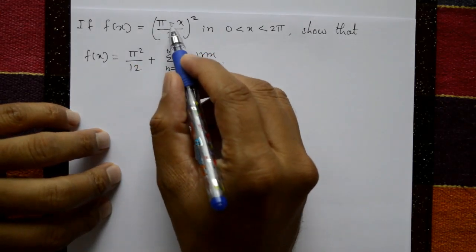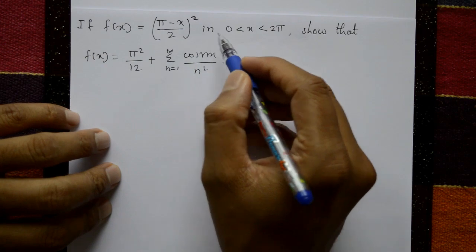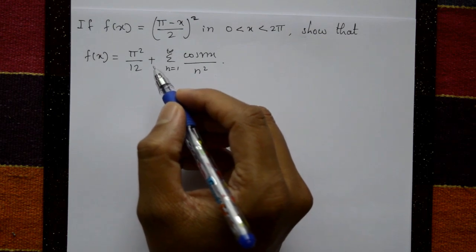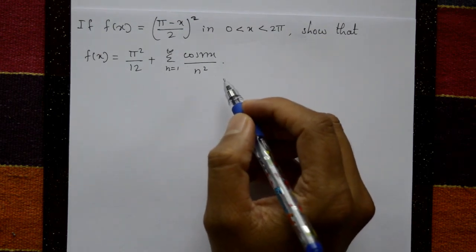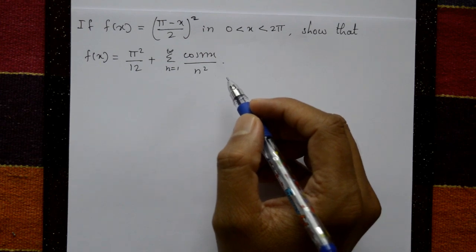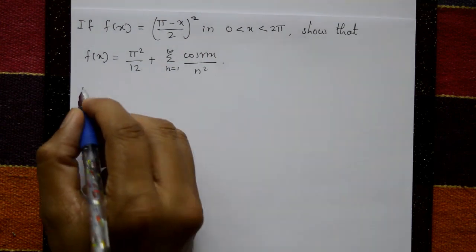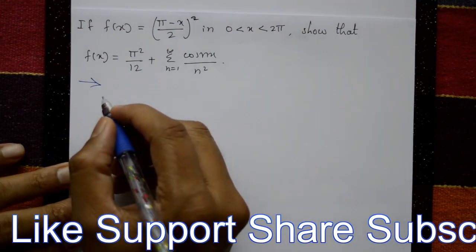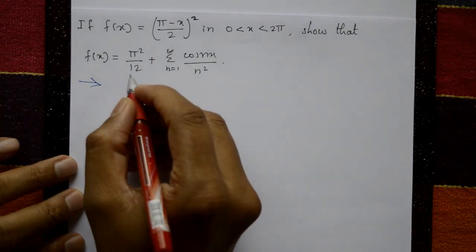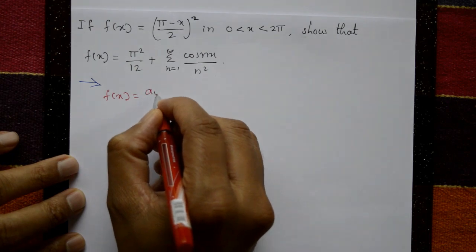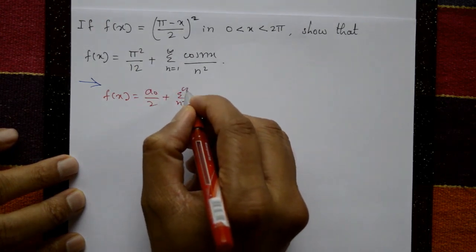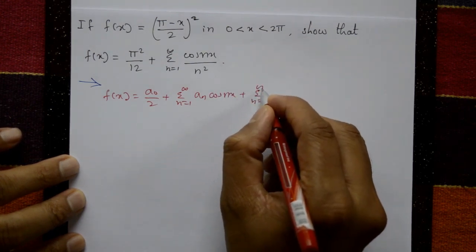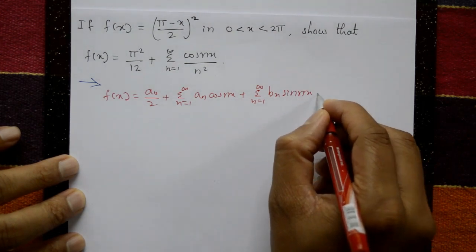If f of x is equal to (π minus x by 2) whole square in interval 0 to 2π, show that f of x is equal to π² by 12 plus summation n equals 1 to infinity cos(nx) by n². The solution starts with the Fourier series: f(x) = a₀ by 2 plus summation of aₙ cos(nx) plus summation of bₙ sin(nx). This is equation number 1.